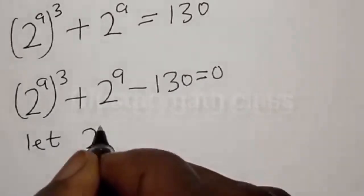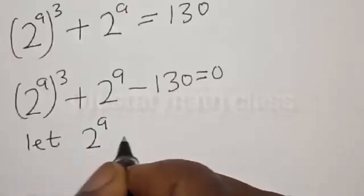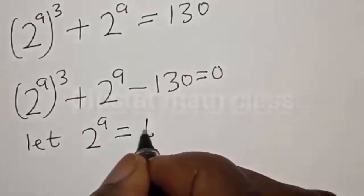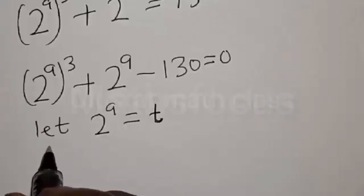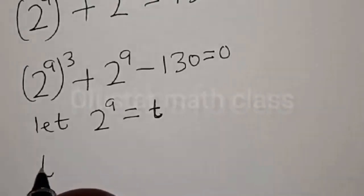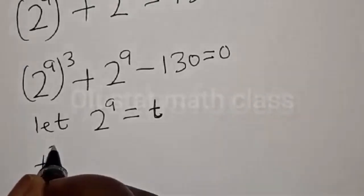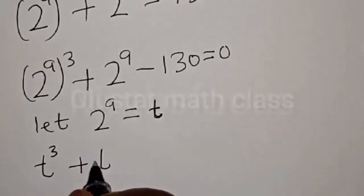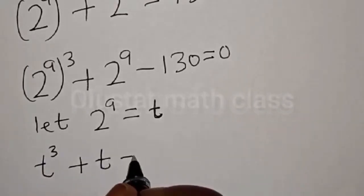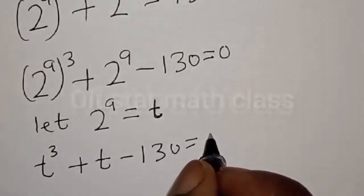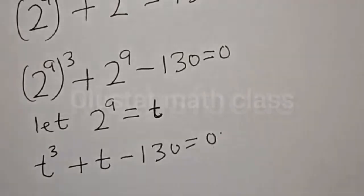Let 2 raised to power a equal t. Then we have t cubed plus t minus 130 is equal to 0.